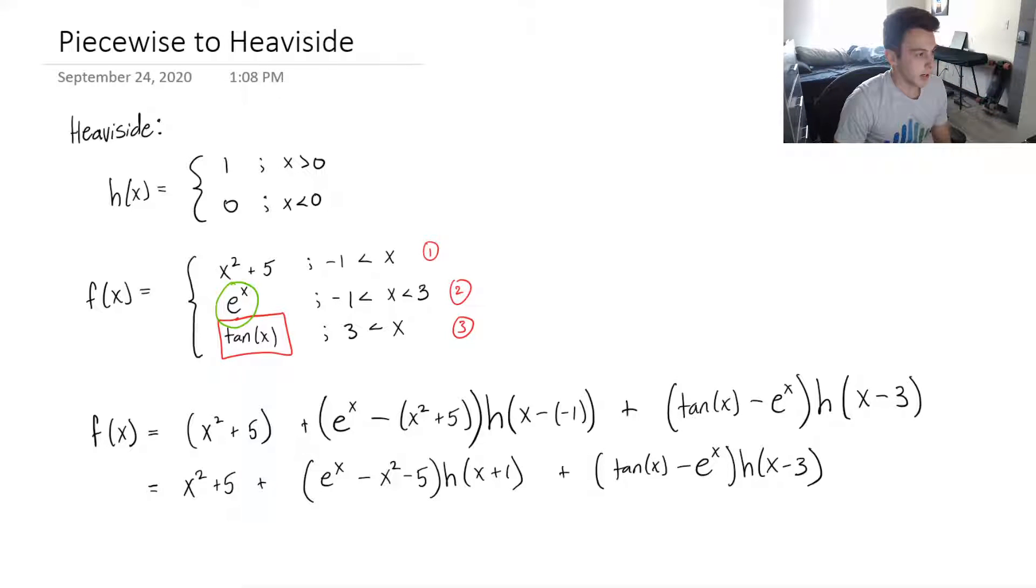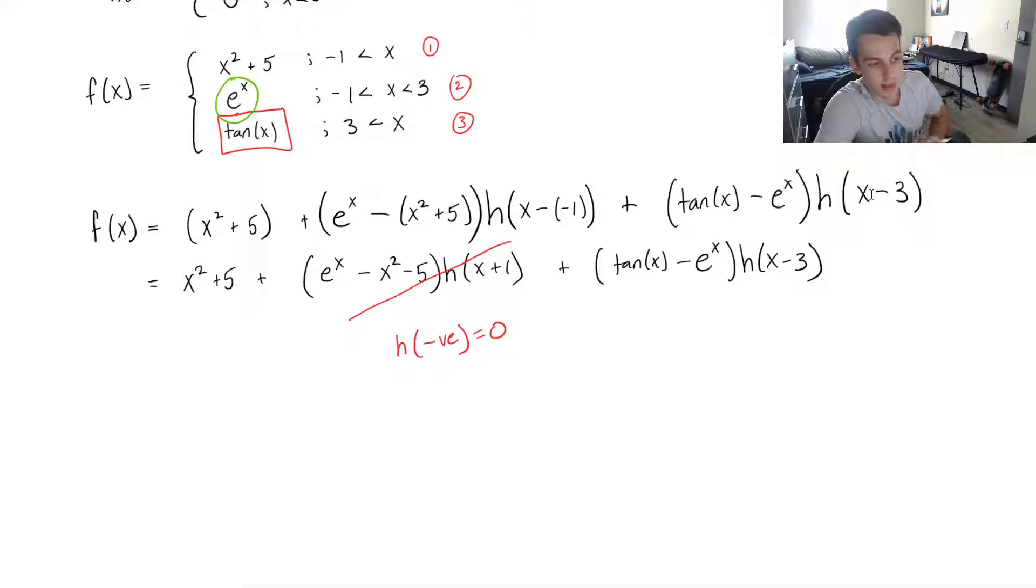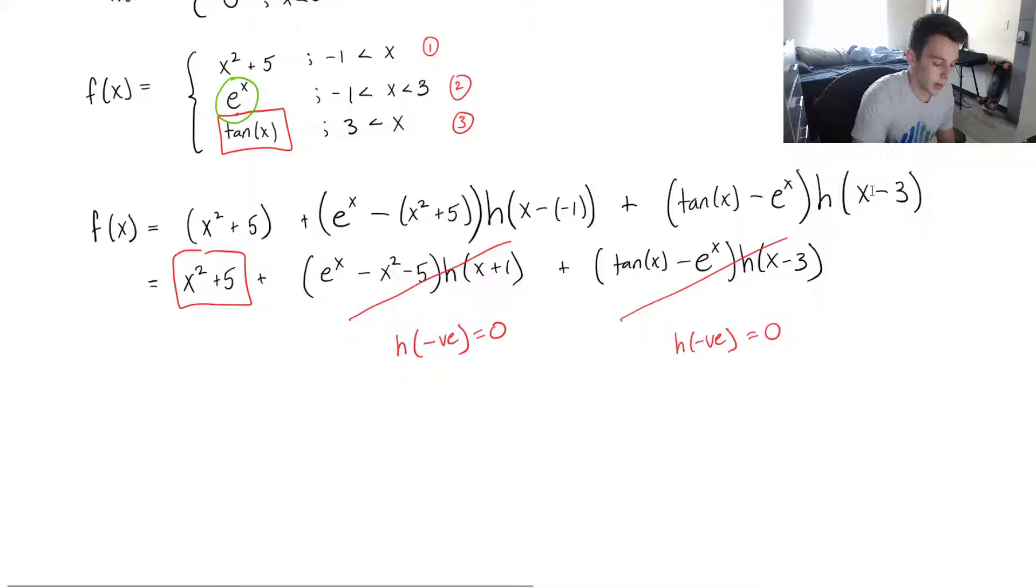And let's just double-check. If you don't believe me, let's double-check. So when x is less than negative one, then that means that this function is going to equal zero because I've got h of a negative number—that's zero. And then negative something lower than negative one, like negative ten minus three, that's also going to be negative, so I have another negative, so this is zero as well. So that means I'm left with x squared plus five, which is what I wanted. Right, so I know that worked.